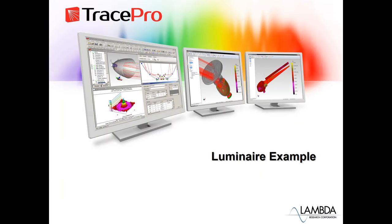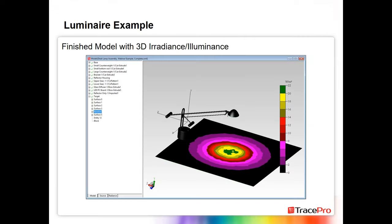Let's look at our first example. I'm going to walk through some slides and then jump over to TracePro for a live demonstration of setting up the model, running a ray trace, and getting results. This example is a desk lamp model built in SolidWorks, showing a finished version with a 3D irradiance illuminance map on a surface in the TracePro model.